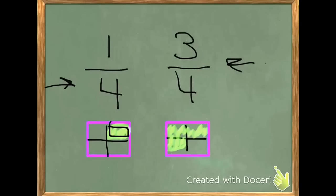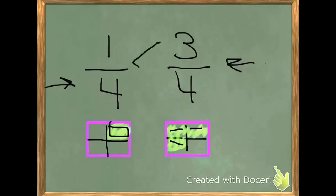Here we have 3 fourths, which means out of the same shape, the same size, there are 4 equal pieces and 3 are shaded in. Therefore, the bigger the numerator when the denominator is the same, the bigger the fraction. So 3 fourths is greater than 1 fourth, and we can tell just by looking at the picture.